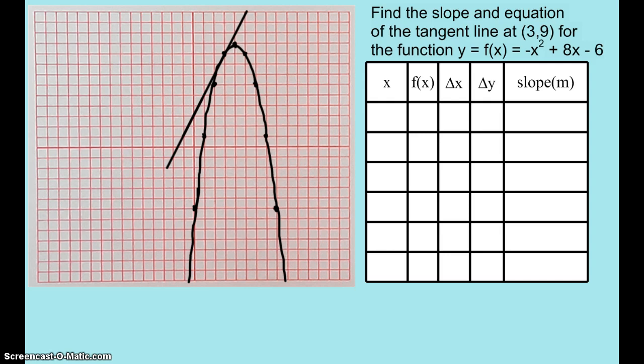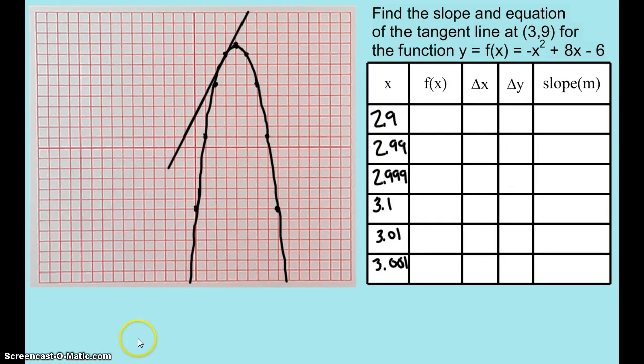I'll show you what values to put in. Now with these points here I would actually like you to put in 2.9, 2.99, 2.999, 3.1, 3.01, and 3.001 into this function up here to find your f(x) of the function. So go ahead and put those values in and I'll be right back.